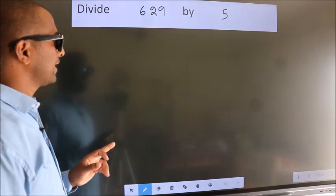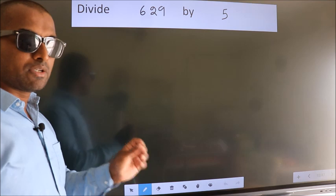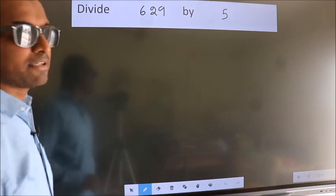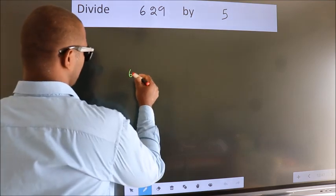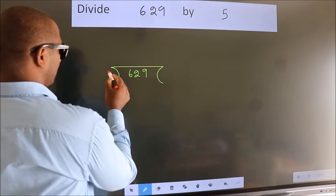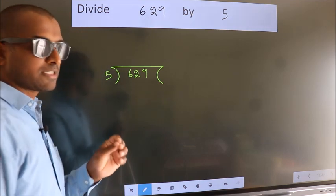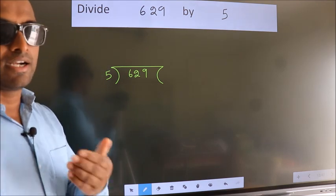Divide 629 by 5. To do this division, we should frame it in this way. 629 here, 5 here. This is your step 1. Next,